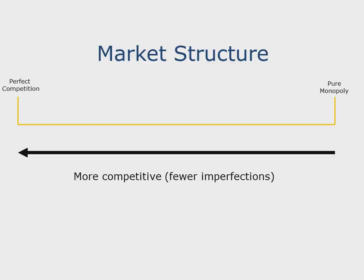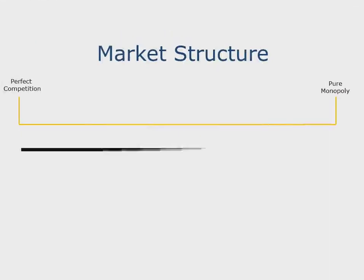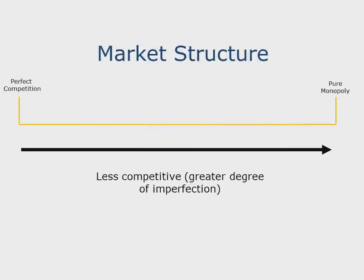If we are moving from monopoly to competition, we are moving to a perfect flow of information, perfect flow of activities, and so on. And if we are moving from perfect competition to pure monopoly, it means we are going closer and closer to imperfections.